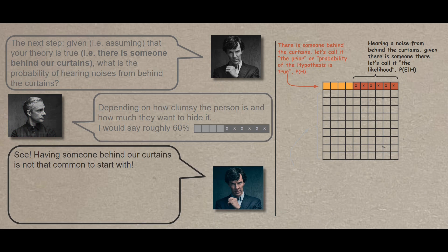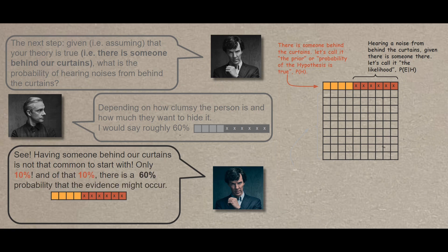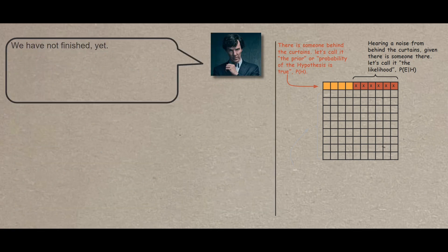See? Having someone behind our curtains is not that common to start with. Only 10%. And of that 10%, there is a 60% probability that the evidence might occur. See how perspective is important and context is key? We haven't finished yet.